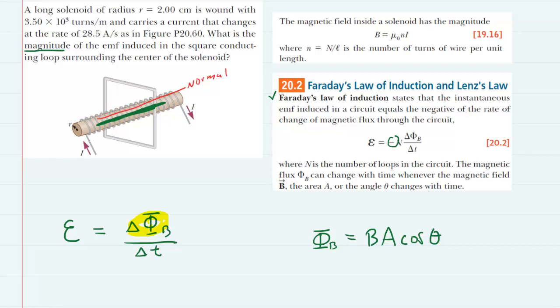So you can see that the normal line, colored in red, and the magnetic field produced by the solenoid would be parallel to one another. And because the normal line and the magnetic field produced by the solenoid are parallel, then the angle between them is zero degrees.